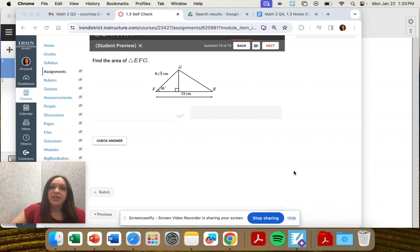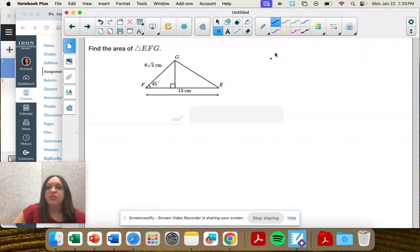Okay, find the area of triangle EFG. So remember, area of a triangle is one half times the base times the height.